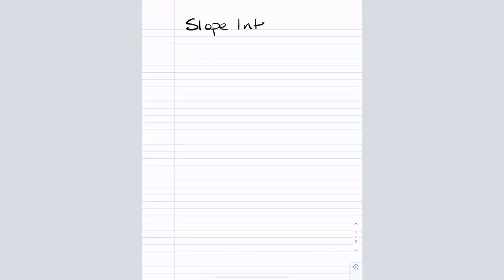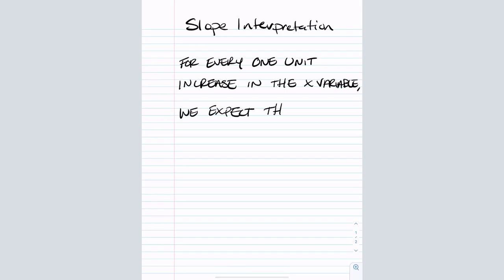Hello, welcome back. Today we're going to be talking about how to interpret the slope for two quantitative variables, and we're talking about it specifically for a simple linear regression. So there's a generic way to interpret slope. You would say for every one unit increase in the x variable, where remember the x variable is the explanatory variable and is located on the horizontal axis.